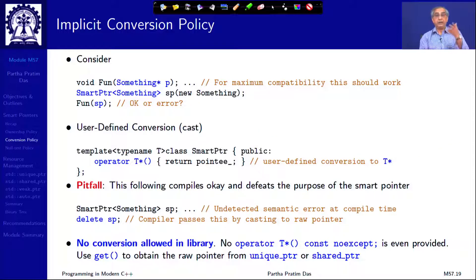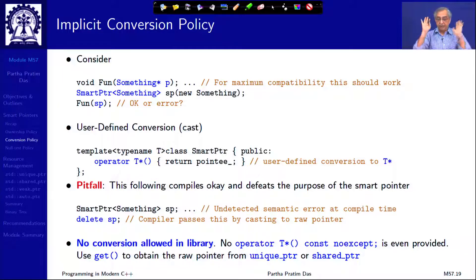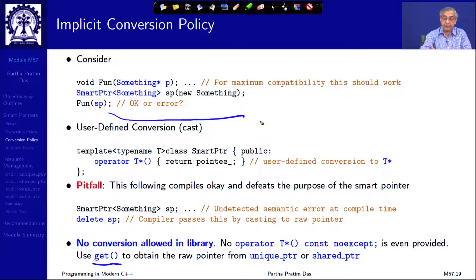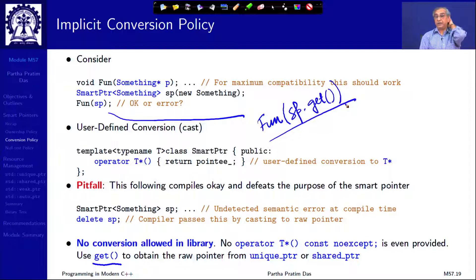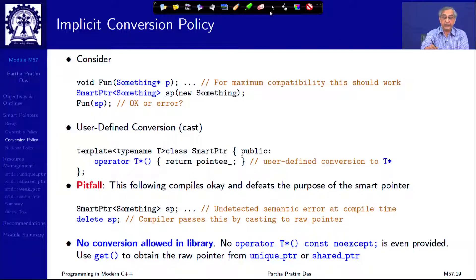The language committee deliberated and said that if this has to be done, it is better that the user makes it explicit. So smart pointers in the standard library do not have a conversion operator; rather they give you a member function `get()` by which you can get the raw pointer. So if you have to call `fun(sp)`, you write `fun(sp.get())` and that gets you the raw pointer. This is less cumbersome than the static cast, and it is what is available for `unique_ptr` and `shared_ptr`.